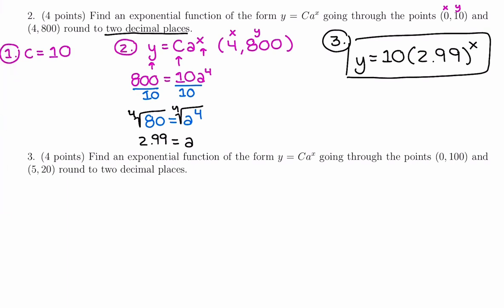Let's do the same thing all over again with another two points, just to make sure we have it down. First step is to identify c. C is the y value of 0. So for this one, c is 100.